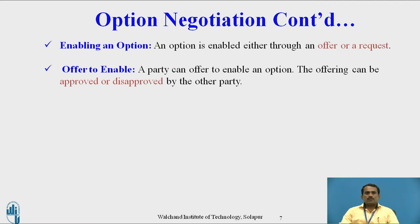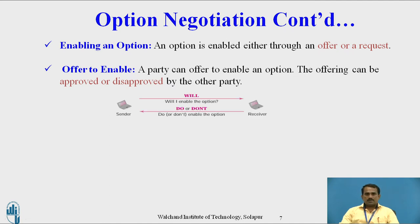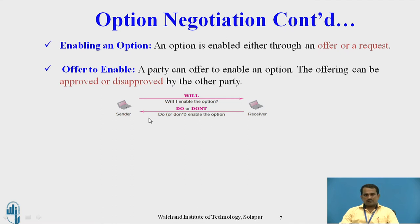Offer to enable: a party can offer to enable an option; the offering can be approved or disapproved by the other party. The sender can send two characters — WILL, and then DO or DON'T. After the client sends a request saying 'I will enable the option,' the server can reply 'DO enable the option' or 'DON'T enable the option.'